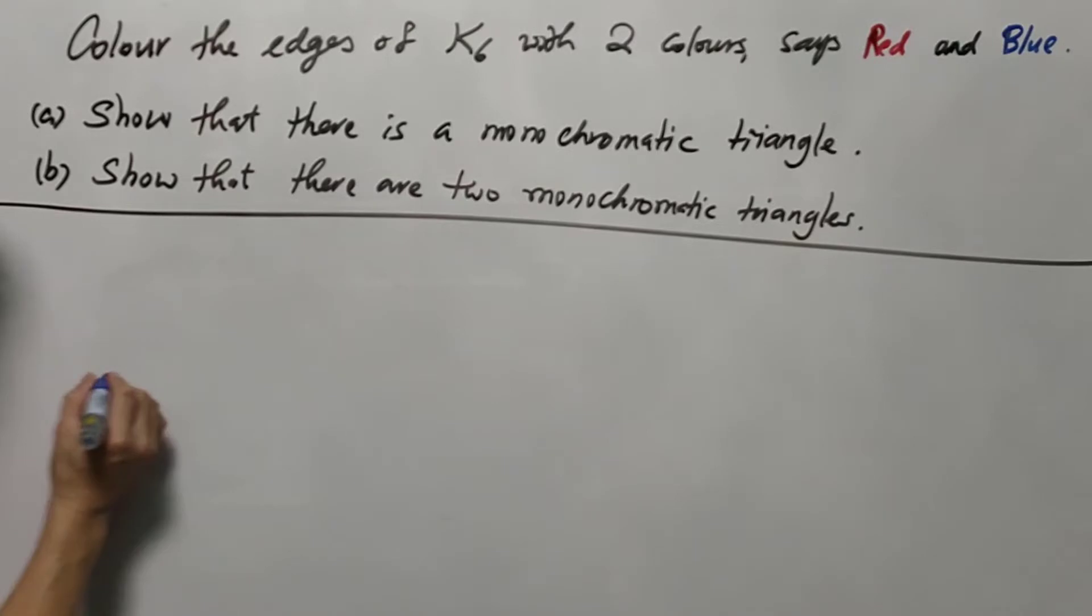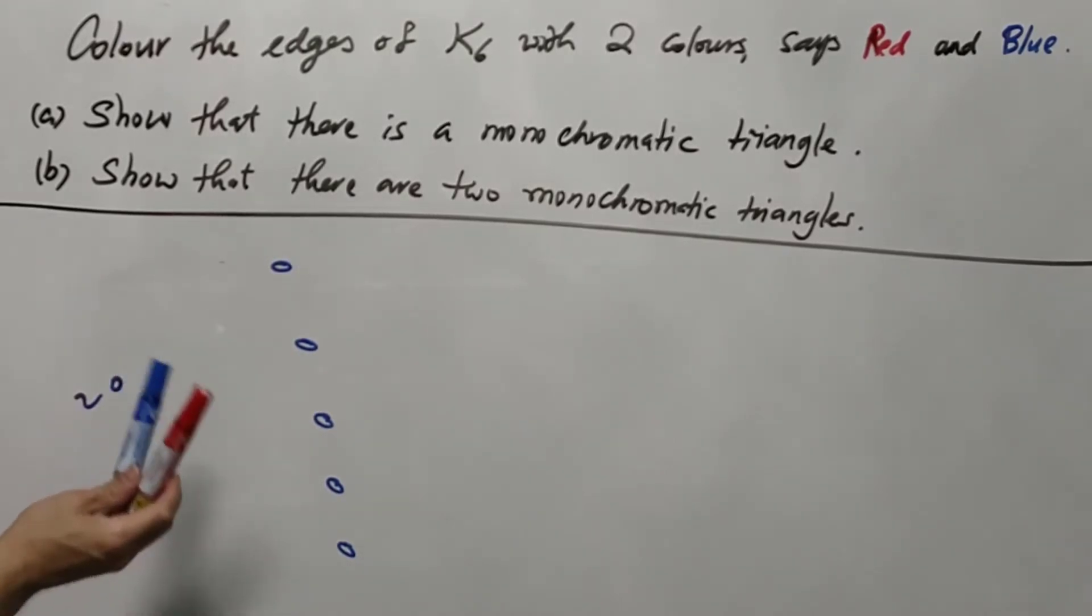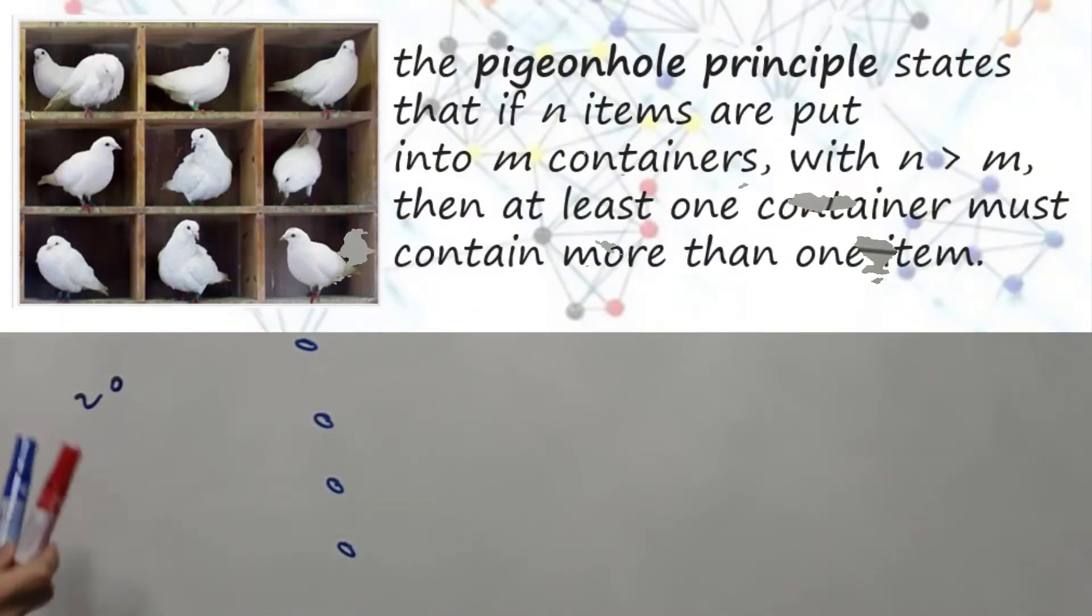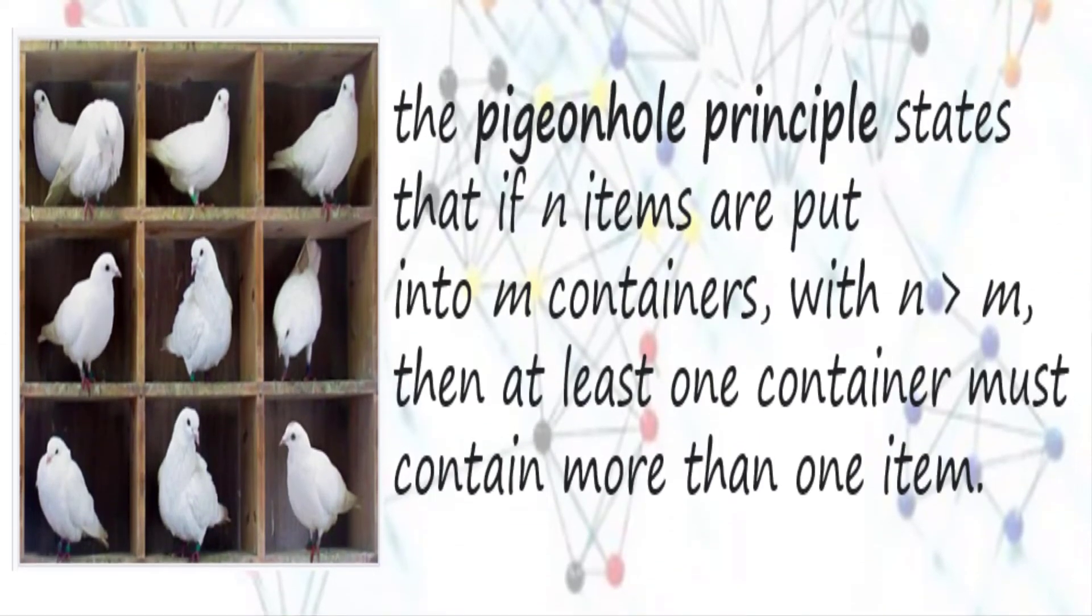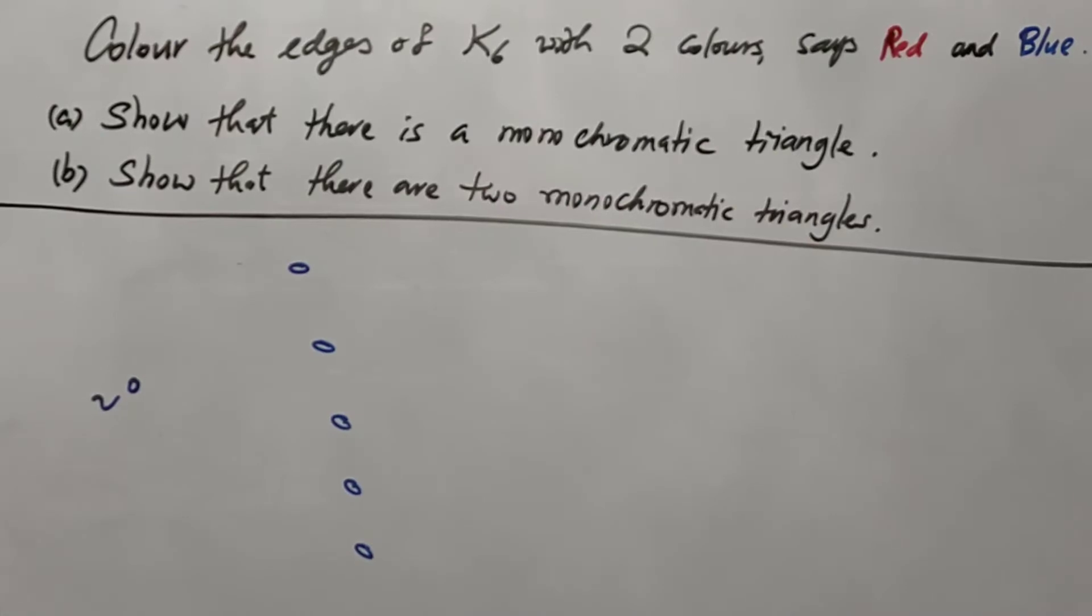For any vertex, we have five neighbors. We need to use either red or blue to join these five vertices. Since we have two choices of color, either blue or red, using pigeonhole principle, there must be one color using at least three times. Let's say blue using at least three times.